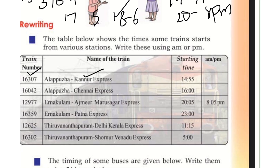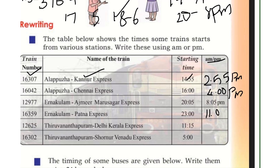We have a train timetable with train numbers, names, and starting times. For example, 14:55 is in the afternoon. 13:00, 14:00 are afternoon times. 16:00 is 4 o'clock in the afternoon. 23:00 is 11 PM.